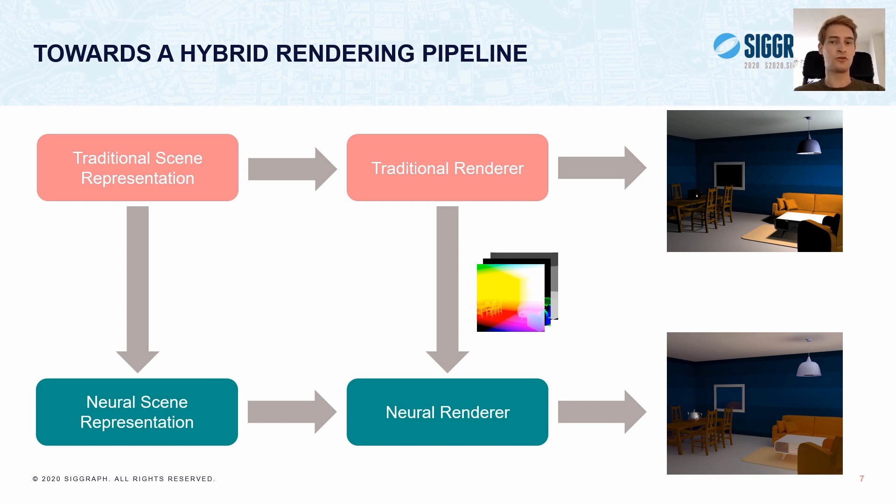So this is a quick overview of how our rendering system works. We'll now focus on the neural scene representation, how to extract it, what it represents, and how we can make it compositional.